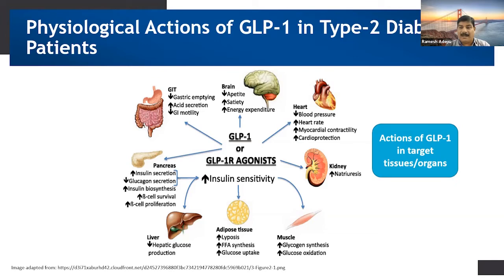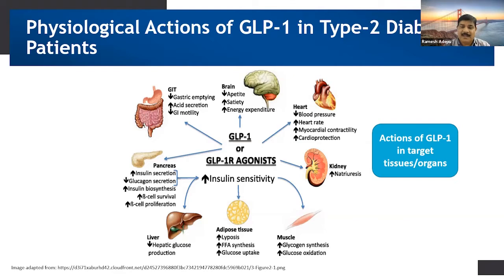On the heart, GLP-1 decreases blood pressure and is therefore very much recommended in diabetic patients who are also associated with cardiovascular complications. It enhances heart rate, myocardial contractility, and cardioprotection. This is the advantage of using GLP-1 in individuals with diabetes mellitus as well as cardiovascular complications. On the brain, it decreases appetite, enhances satiety, and increases energy expenditure.